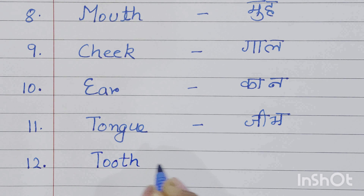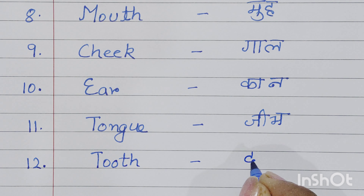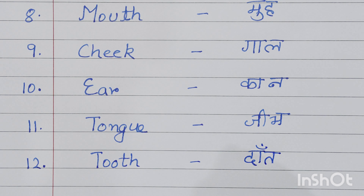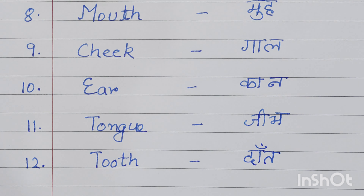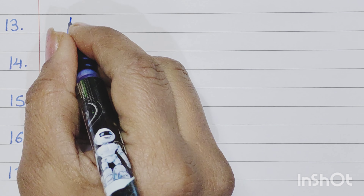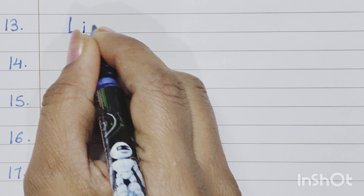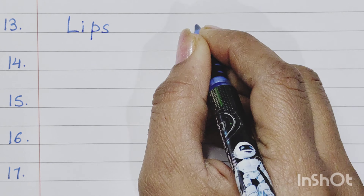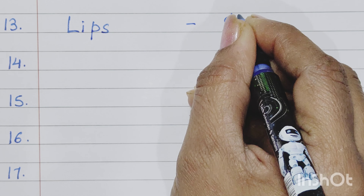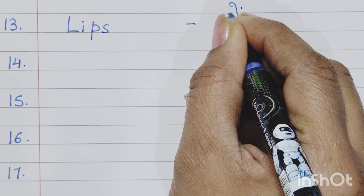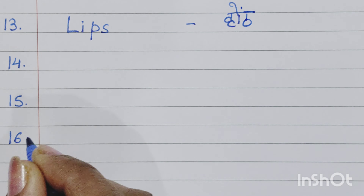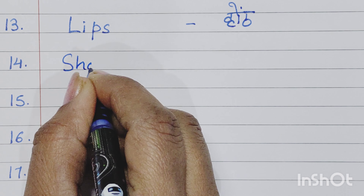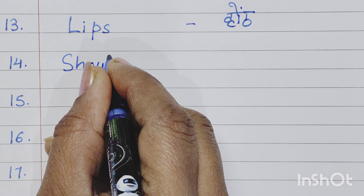Fifth is eyebrow, E-Y-E-B-R-O-W, eyebrow means bhaun. Sixth is N-O-S-E, nose. Nose means naak.